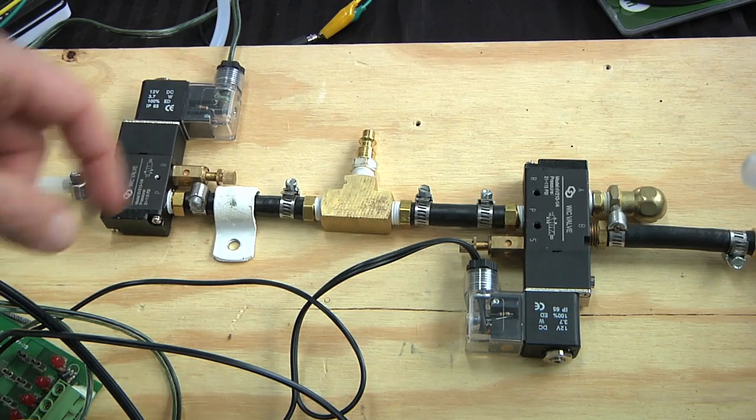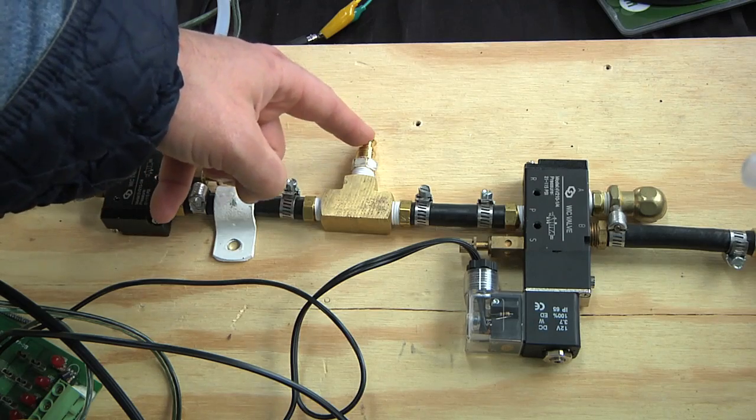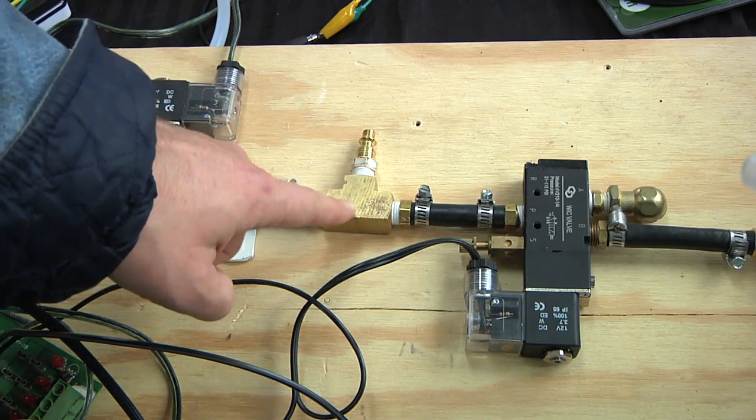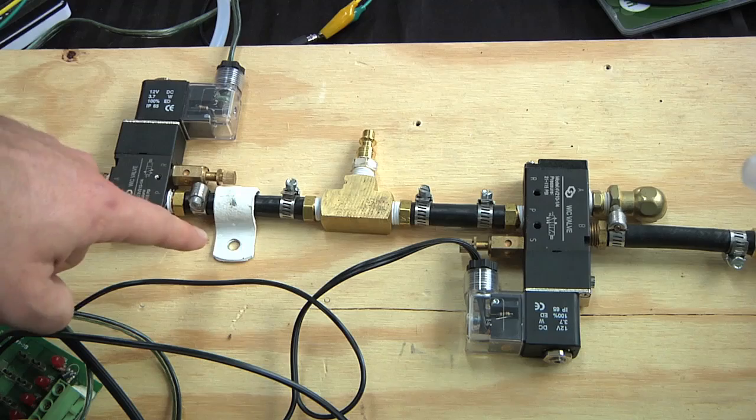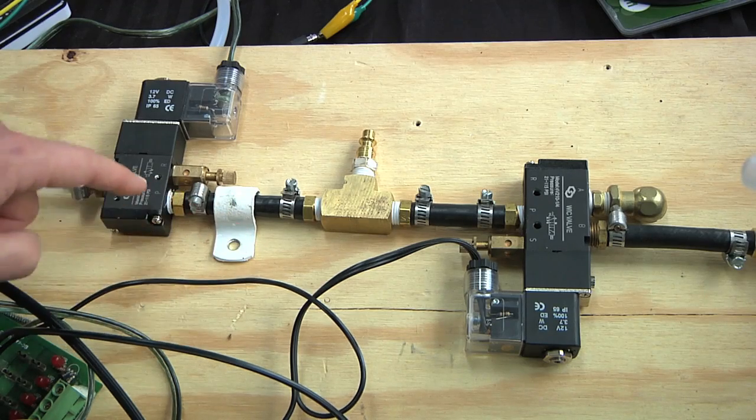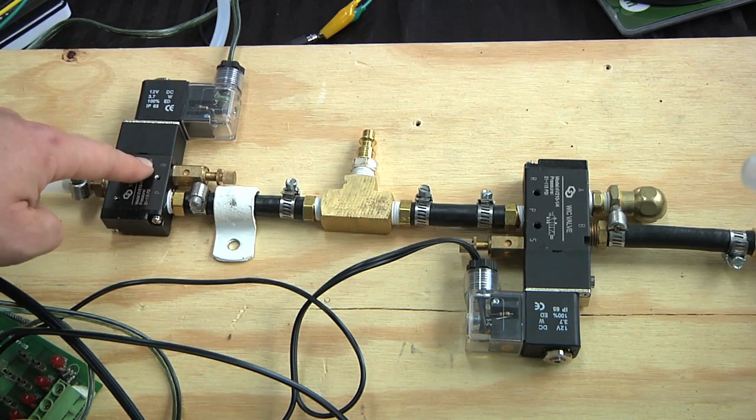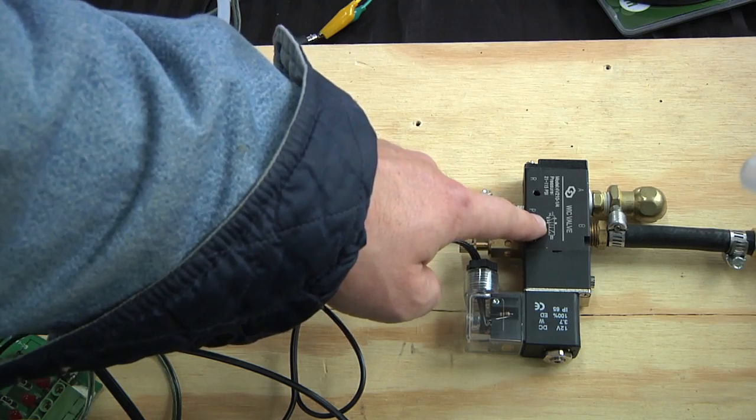So instead, here's what I'm thinking. I've got a quick release connection that'll go to an air compressor hose. And then the air gets split, so it goes out to both valves. Essentially what I want to do is use this one to open the doors and this one to close the doors.